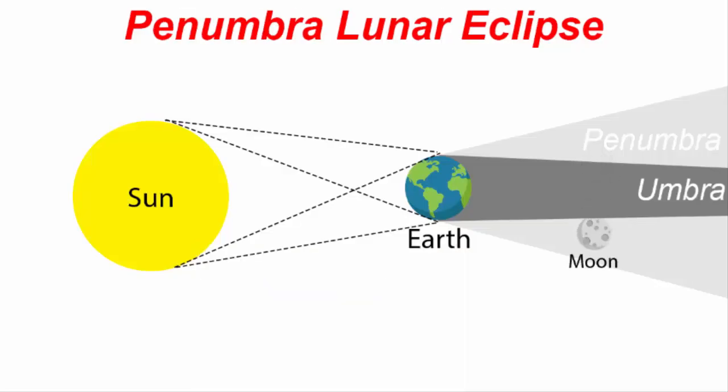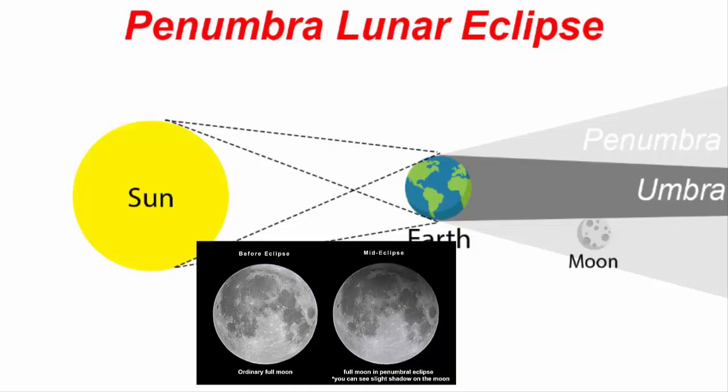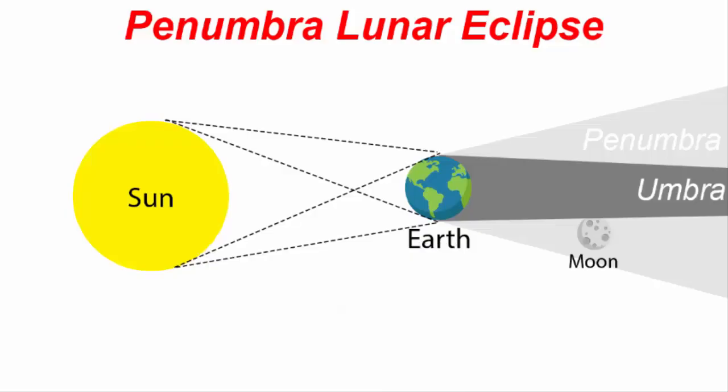In a penumbral lunar eclipse, only the outer shadow of earth, which is called the penumbra, falls on the moon's face. This third kind of lunar eclipse is much more difficult to observe.